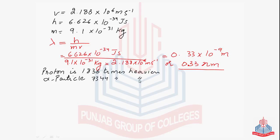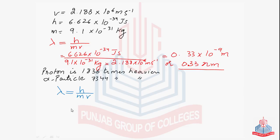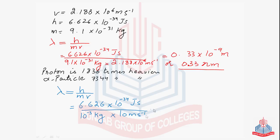Now let's talk about a moving stone. Consider a stone of mass 1 gram moving with a velocity of 10 m/s. The de Broglie wavelength can be calculated using the same formula: λ = h/mv = (6.626 × 10⁻³⁴) / (10⁻³ × 10), and the answer comes out to be 6.62 × 10⁻³⁰ meters — again a very very small value.